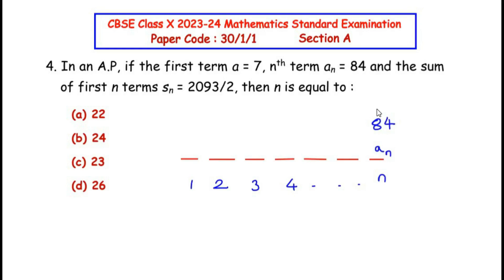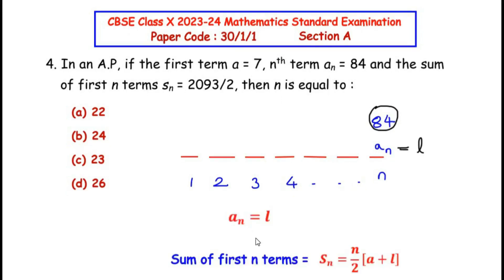The nth term value is given as an, mentioned as 84, and we know that this is the last term because they have given sum of first n terms, that means n becomes the last number. Since an is the last value of the given series or sequence, we are going to also consider this as l, that is the last term. Now we have a relationship that connects the sum of n terms, the first term, the last term and the number of terms.